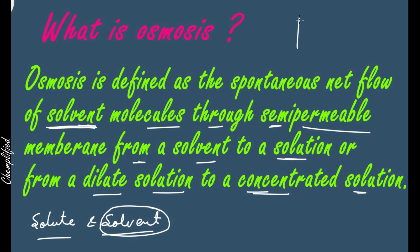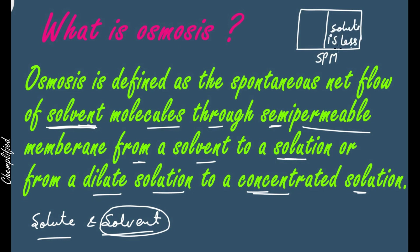Consider this diagram — just like diffusion, there is a container with a semi-permeable membrane. Only the solvent particles can move. Suppose in this container solute is less, which means solvent is in high amount. If solvent is in high amount in this container, then solvent particles will move from container 2 to container 1 — that's how osmosis works.